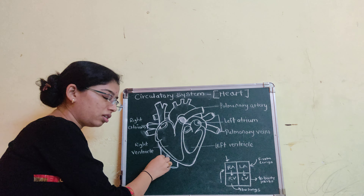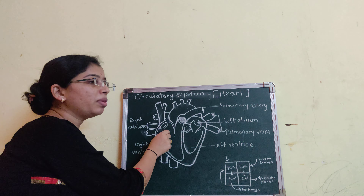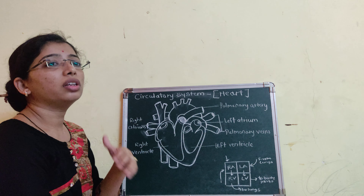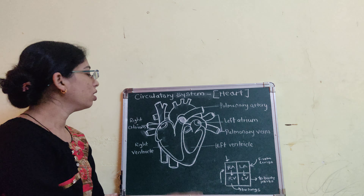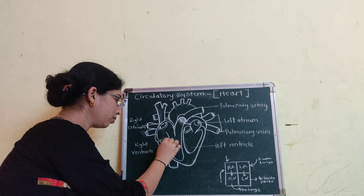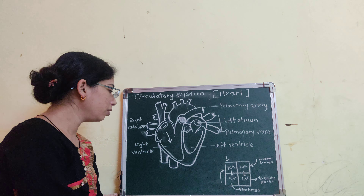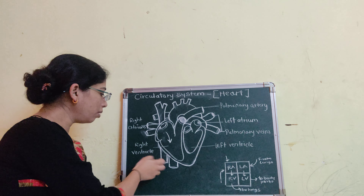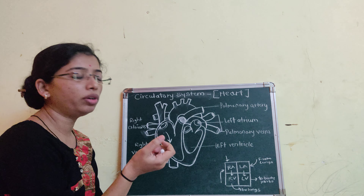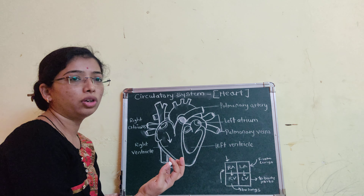First, the impure or de-oxygenated blood enters into the right atrium with the help of the upper and lower vena cavae. At that time, the right atrium is relaxed, and when the right atrium contracts, the de-oxygenated blood enters into the right ventricle.